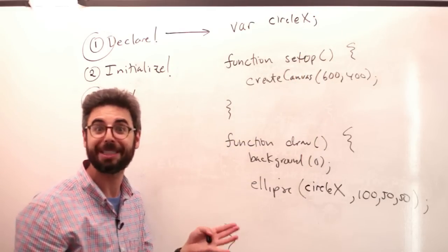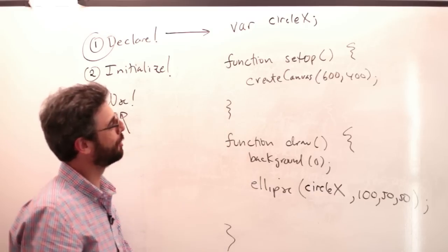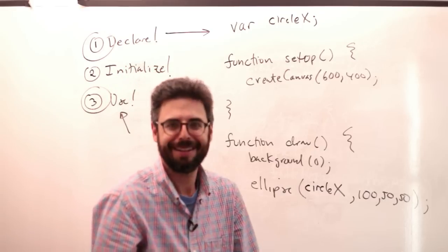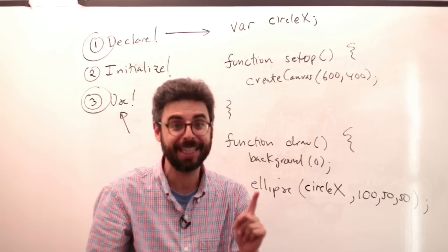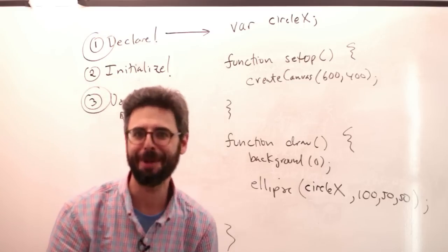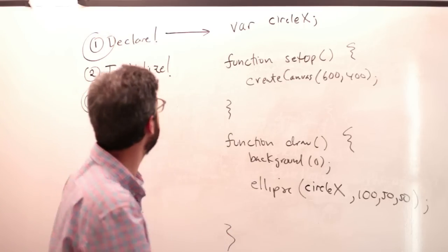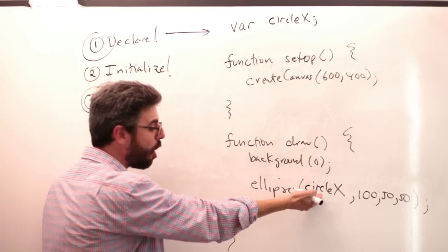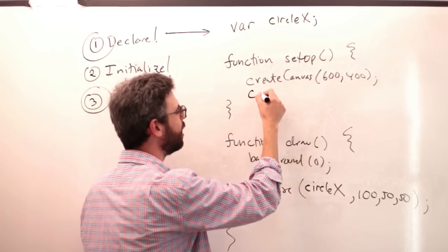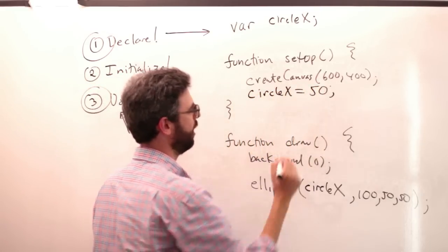If you think about it, there's a huge missing piece, right? Because what's the value of circleX? It could be anything. Right now, technically in JavaScript, the value is undefined - I think I'm right about that, someone will correct me if I'm wrong. But it's undefined because I never gave it an initial value. This is important - it's not going to be able to draw circleX anywhere unless we give it an initial value. So right here in setup, I could say circleX equals 50.